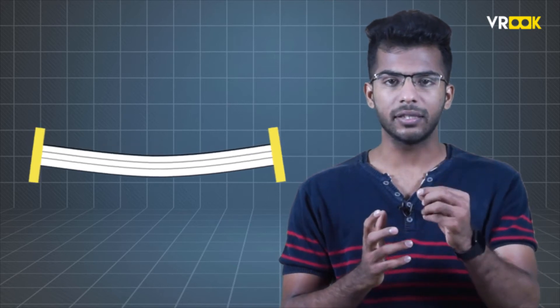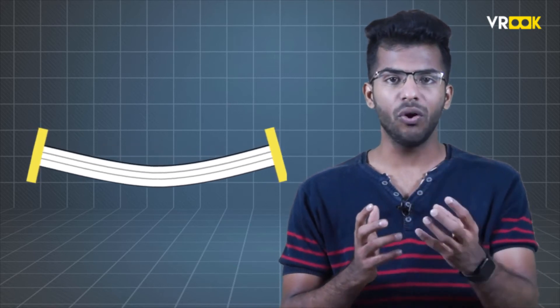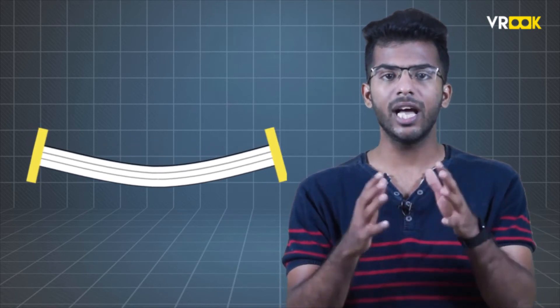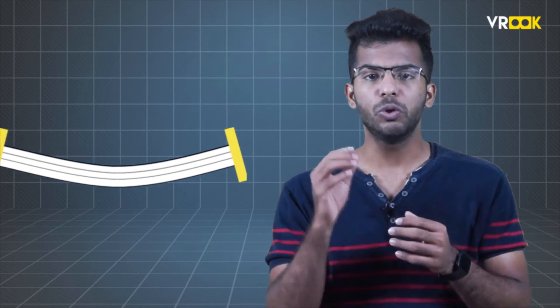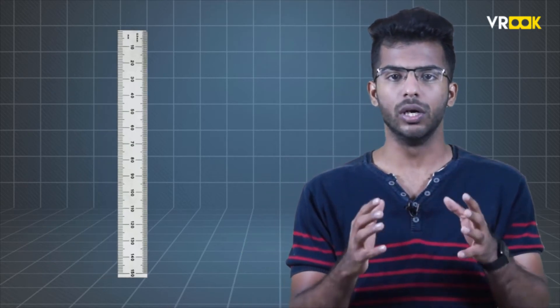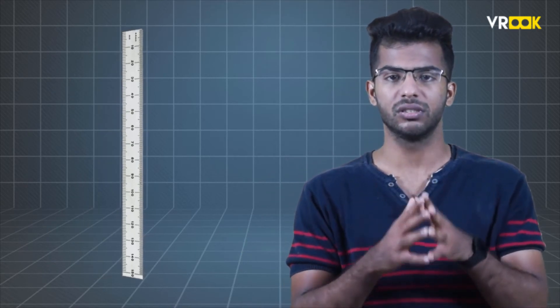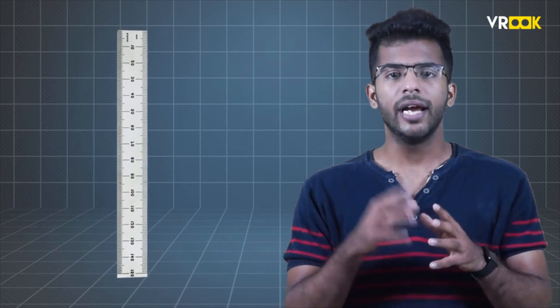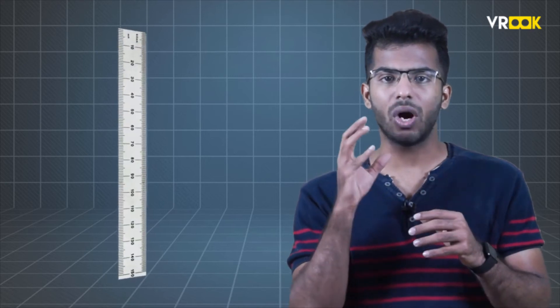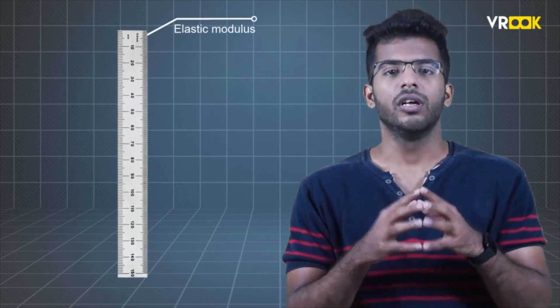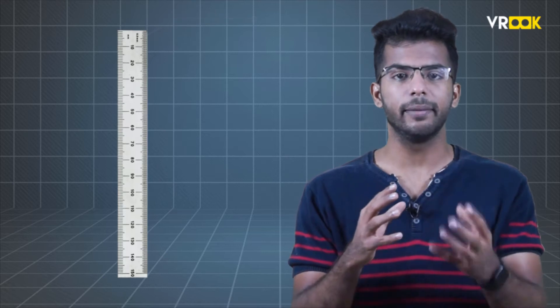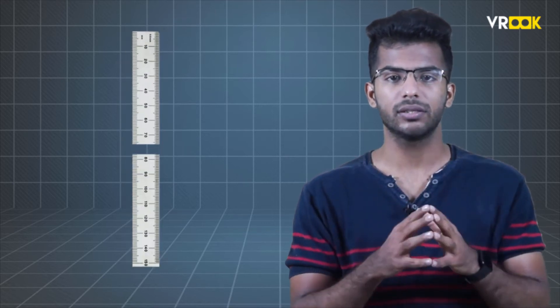Area moment of inertia is resistance to bending. It is also referred to as second moment of area. The resistance to bending of a beam is the area moment of inertia. To understand the area moment of inertia, let us do a simple experiment. Take a long ruler which is used to measure distance and draw lines. It is made of plastic and has some elastic modulus. If the force is beyond a certain limit, it will break into two parts.